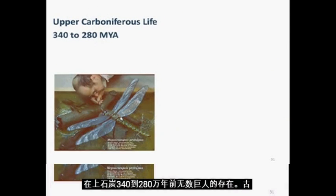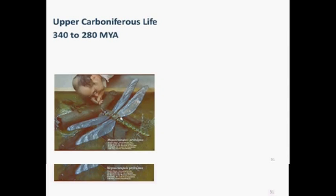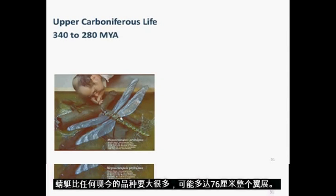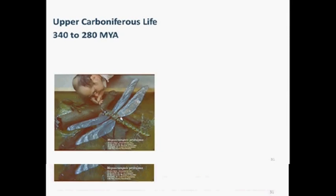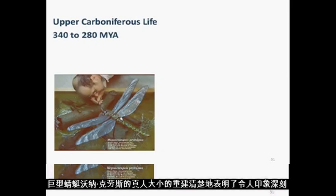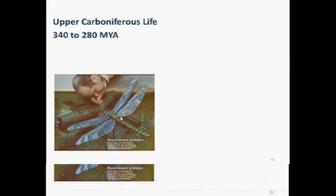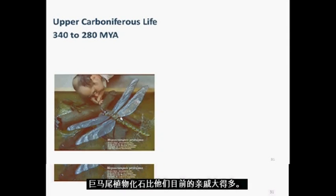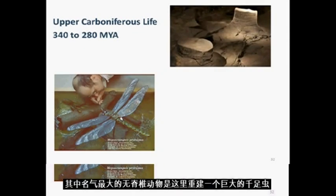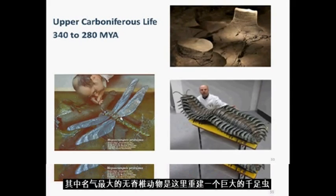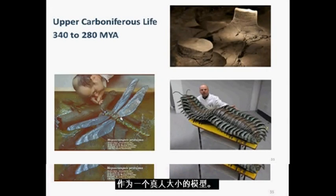In the upper Carboniferous, 340 to 280 million years ago, numerous giants existed. Ancient dragonflies were much larger than any present-day species, possibly up to 76 cm across the wingspan. A life-size reconstruction of a giant dragonfly by Werner Krauss clearly demonstrates the impressive scale of this ancient creature. Fossils of giant horsetail plants are much larger than their present relatives. One of the largest known invertebrates was a giant millipede, which is reconstructed here as a life-size model.